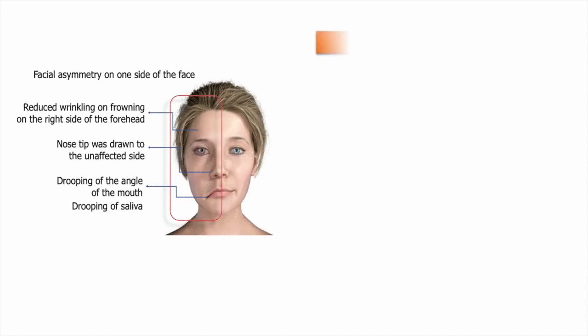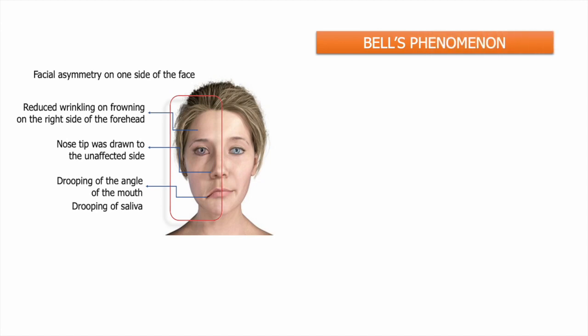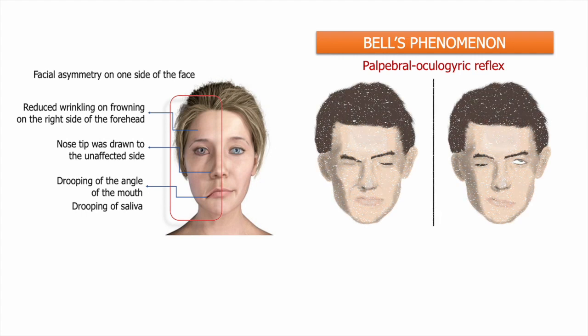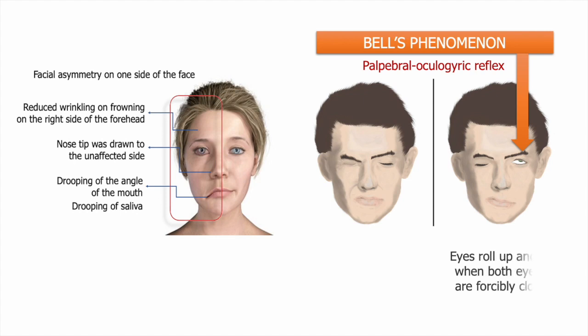Looking at the characteristic feature that provides a clue to diagnosing Bell's palsy — this is also known as the Bell's phenomenon, or palpable oculogyric reflex — which refers to the movement of the eyeballs in an upward direction when the eyelids are forcefully closed. It was Charles Bell, a great British anatomist, who first observed this phenomenon in 1823 when trying to close the eyelids of a patient with facial palsy. This phenomenon represents a reflex in which the eyes roll up and out when both eyelids are forcibly closed. The facial nerve carries the afferent fibers for this reflex, while the efferent fibers travel via the oculomotor nerve to the superior rectus muscle that controls upper eyelid movement.